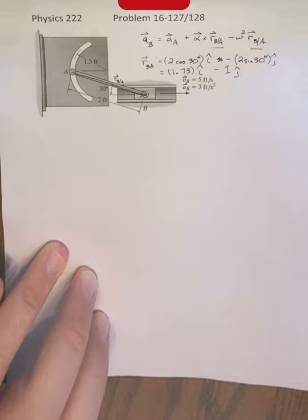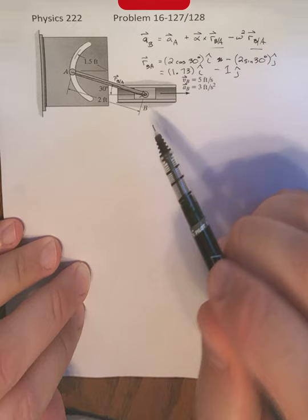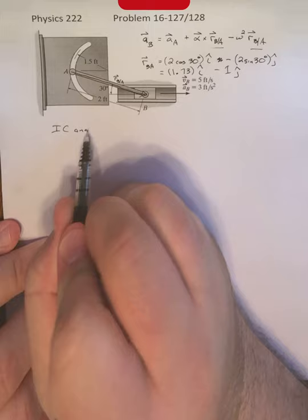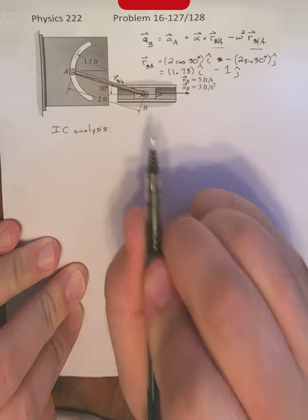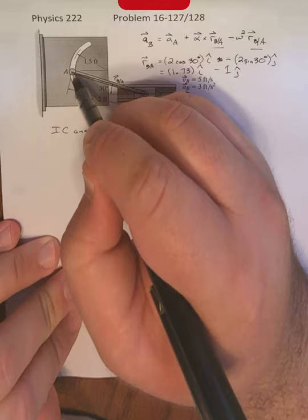Now, to do that, we're going to use one of the techniques from the previous section, and that was an instantaneous center analysis. Because if we look at these points here, point B, we've already determined is traveling purely horizontally. Even though A is traveling along the circular arc at this instant, its velocity is pointing purely tangentially.